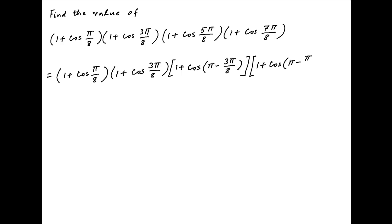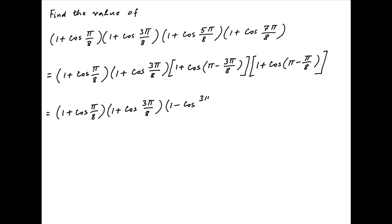Now, cos(π - θ) = -cos(θ). Therefore cos(π - 3π/8) = -cos(3π/8), and cos(π - π/8) = -cos(π/8). So the given expression becomes (1 + cos(π/8))(1 + cos(3π/8))(1 - cos(3π/8))(1 - cos(π/8)).